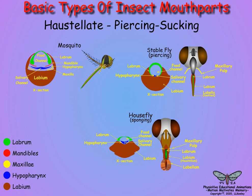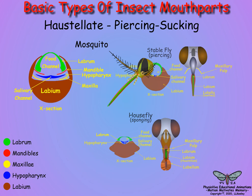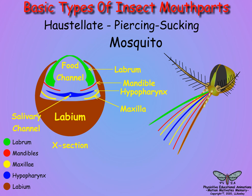In adult Diptera, the labrum and labium form the main body of the proboscis, with the hypopharynx serving as a salivary channel. In mosquitoes, horse flies, black flies, and sand flies, the stylets are comprised of all the mouthparts, with the labrum, paired maxillary mandibles, and the central hypopharynx, surrounded by the labium acting as a sheath. The labrum forms a feeding channel, and the hypopharynx has a channel for salivary secretions.